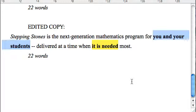But I want to show you something that we can also do with the you rule, which is a bit subtler. Delivered at a time when it is needed most. Now, one of the things we say about the you rule, more broadly defined, is that we should write not about our product or service, but about the reader, the reader's life. Instead of saying that our product is needed, we should talk about who needs it. And in this case, it's pretty simple. Delivered at a time when you need it most.